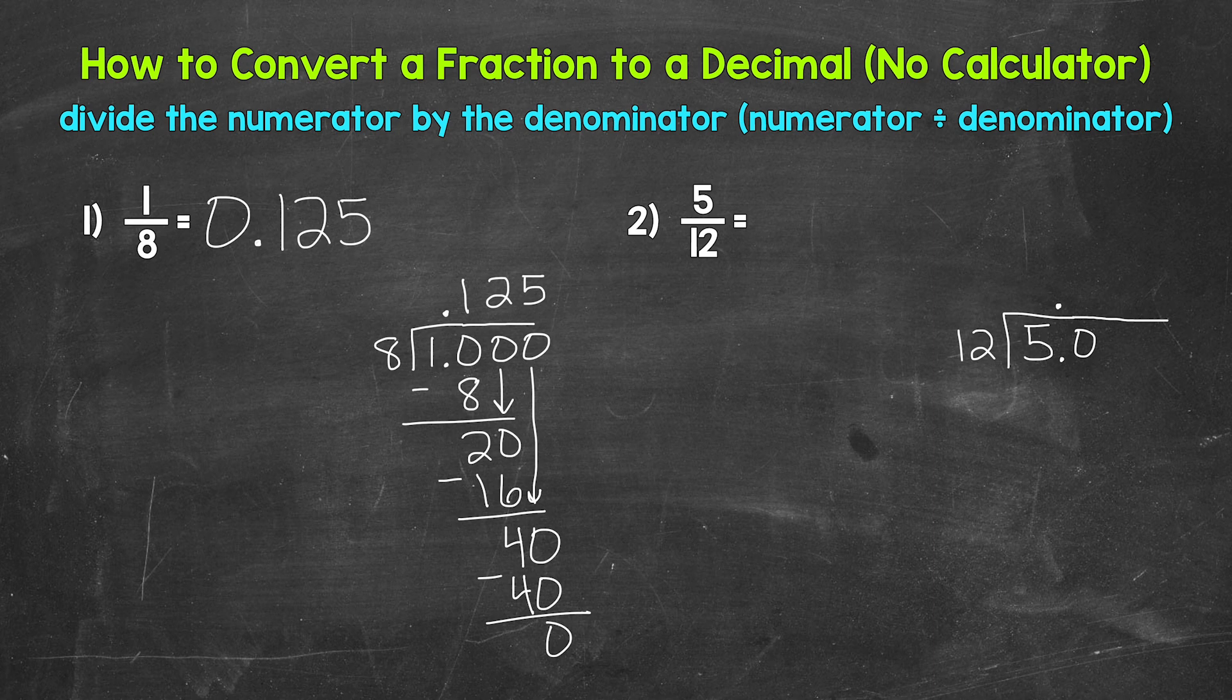We can think of this as 50 divided by 12. So how many whole groups of 12 in 50? Well, 4. That gets us to 48. Make sure that 4 is above the 0. 4 times 12, 48. Subtract. 50 minus 48 is 2. So we need to continue on.